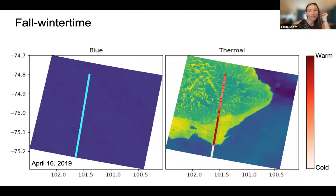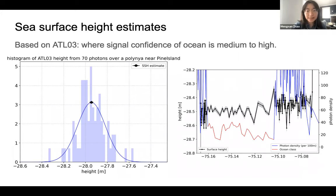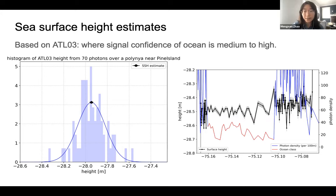We're interested in extracting detailed sea surface height signatures inside the polinia. The plots here are built on code from my teammates. With some experiments, we decided to estimate the height using a histogram of every 70 photons along the track — an example is shown on the left. The height with the largest data concentration is considered the sea surface height estimate, and uncertainties are characterized by standard errors. On the right, we show the height estimate along a track across the polinia, where the black line is the height estimate, gray indicates uncertainties, and colored lines show photon densities.